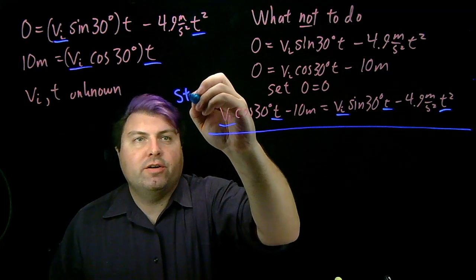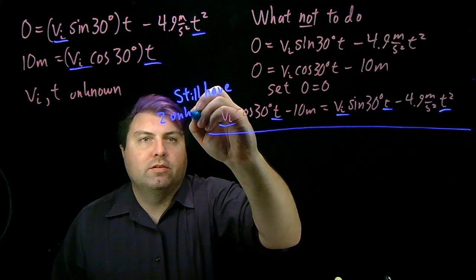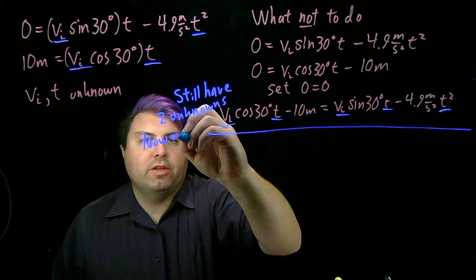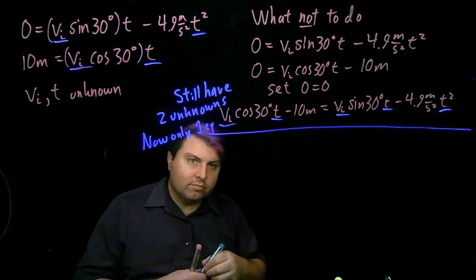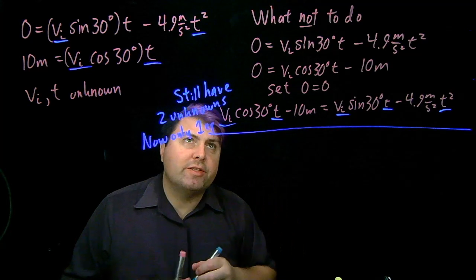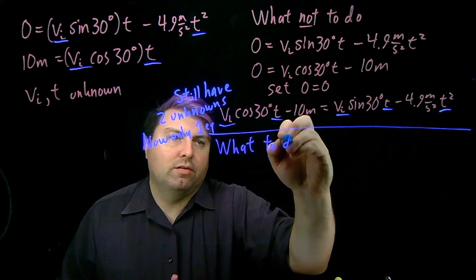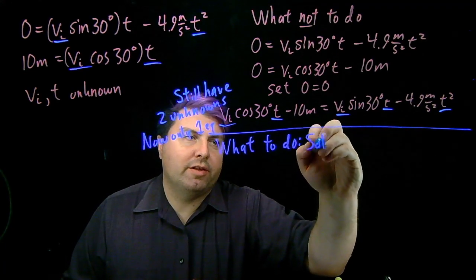We still have two unknowns but now only one equation. So what we want to do instead is we want to solve and substitute.